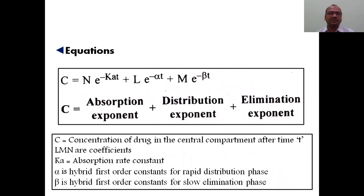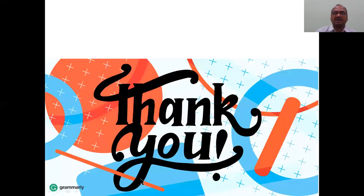Equations we are using here: C equals N into e to the power of minus Ka into t, plus L into e to the power of minus alpha t, plus M into e to the power of minus beta t. This is the main equation. It is concentration of drug present in the plasma if you're using two compartment open model for extra vascular route. Here L, M, N, all these are the constants or coefficients. Ka is absorption rate constant, alpha and beta are the hybrid constants.